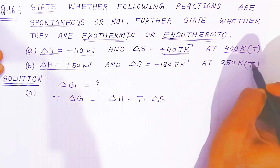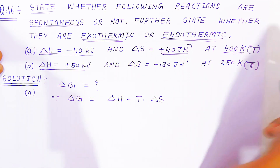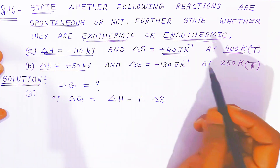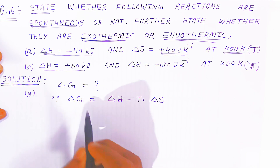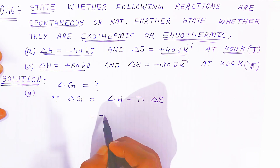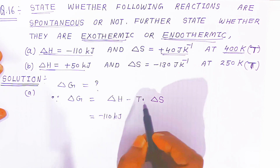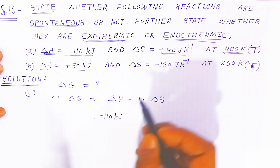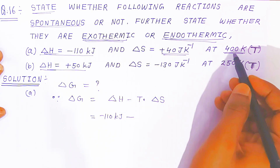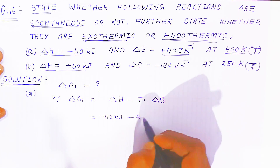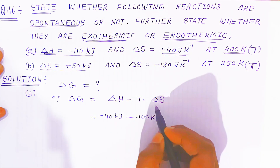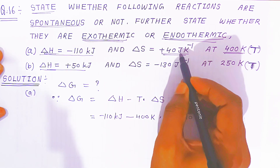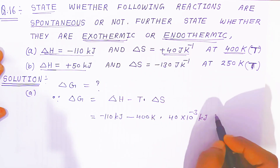In both conditions, capital T is given — representing temperature at which this reaction is taking place. So with the help of this formula, we have to find the change in Gibbs energy. Just put the values: ΔH is given minus 110 kilojoule. Since it is in kilojoule and ΔS is in joule, multiply by 10 raised to minus 3 to convert. Temperature is given at 400 kelvin. Multiply by entropy, that is 40 into 10 raised to minus 3 — joule will convert into kilojoule per kelvin.